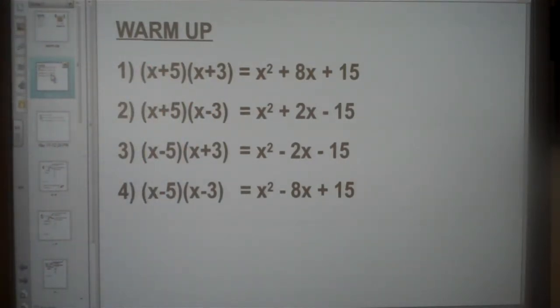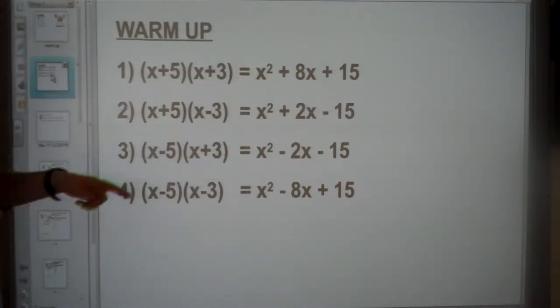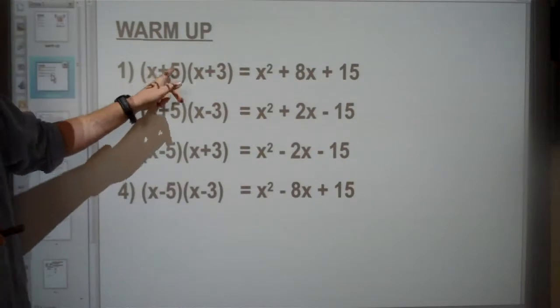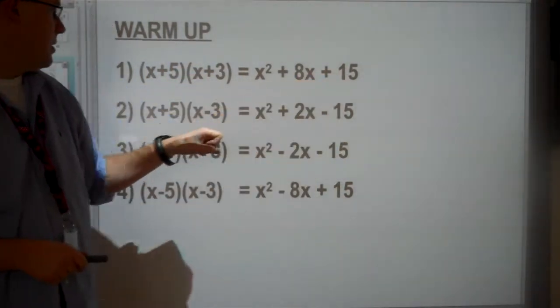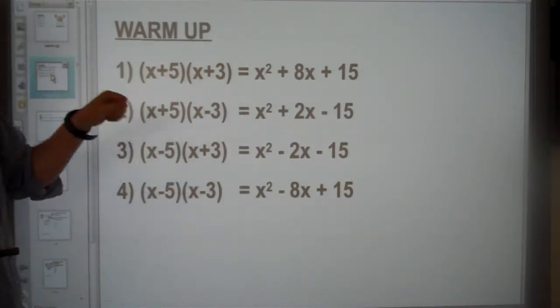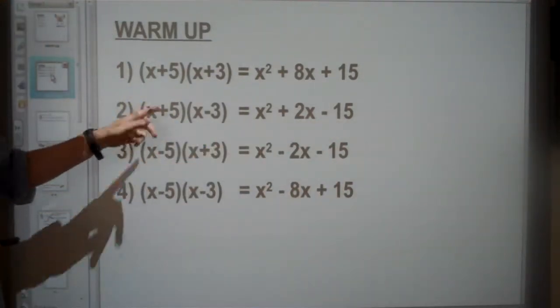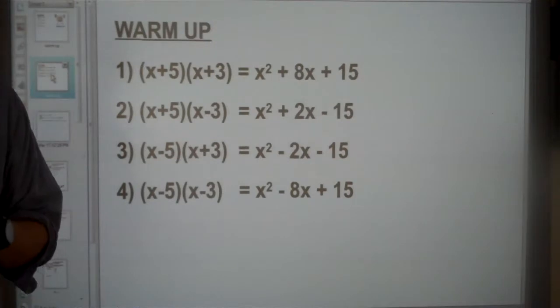We also looked at connections between these things here. The reason we get x² for all our answers is because we always have x and x in our parentheses. Notice all the answers are either 15 or -15, and that's because 5 times 3 gives us 15. The ones that give us positive 15, notice it could either be 2 positive signs or 2 negative signs. If we've got -15, that happens when one is positive and one is negative.